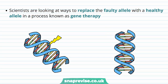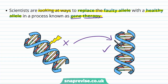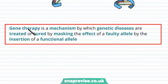Many scientists are looking at different ways to replace that faulty allele with a healthy version of the allele, and this process is known as gene therapy. A therapy is when we're trying to fix something or help or cure a disease. Gene therapy is a mechanism by which genetic diseases are treated or cured by masking the effect of a faulty allele by the insertion of a functional allele.